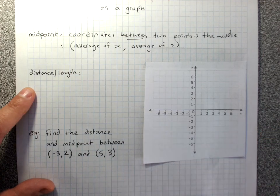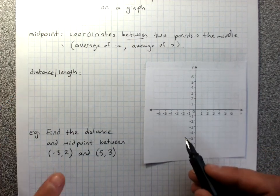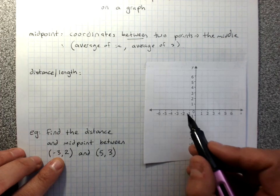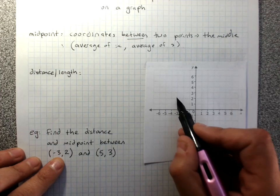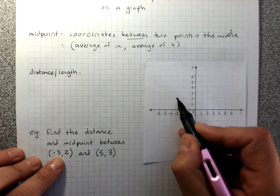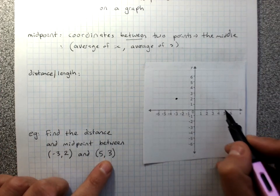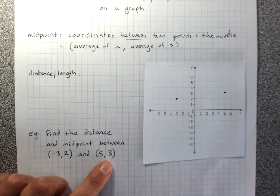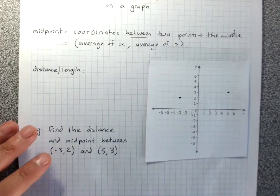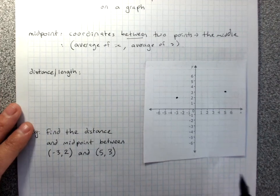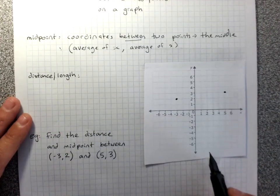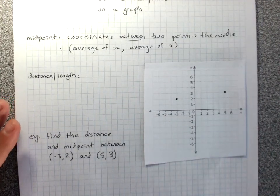Then if you're comfortable with the working, great, we'll show the working. So the point negative 3, 2, and 5, 3. And we're after the distance between those two points and the midpoint between those two points.